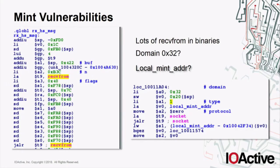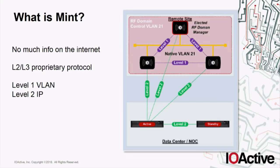Let's move on to the main vulnerabilities. When I was reverse engineering some binaries, I realized they were receiving data from some particular sockets using non-standard values — for instance, the 0x32 value for the domain value, and some references like 'local_mint_address'. I wanted to know what this MINT thing was. There's not much information on the internet about how it works internally. Basically, it's a layer 2/layer 3 proprietary protocol originally created by Motorola, with two levels: Level 1 for VLAN and Level 2 for IP.